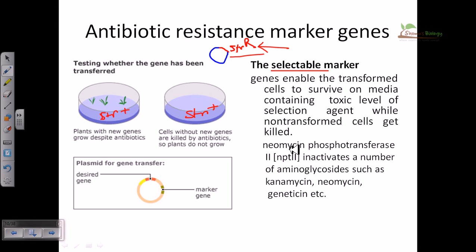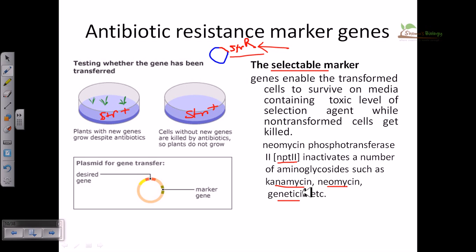A very common marker in plant transformation systems is neomycin phosphotransferase (NPT2). NPT2 inactivates a number of aminoglycosides such as kanamycin, neomycin, and gentamicin. If cells are plated onto kanamycin-, neomycin-, or geneticin-containing media, only those plant cells expressing NPT2 — meaning successfully transformed cells — can grow. All others lacking NPT2 activity cannot survive on these plates.